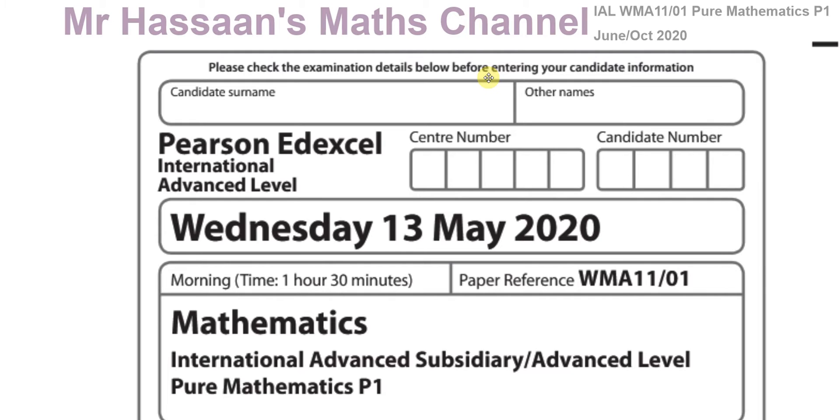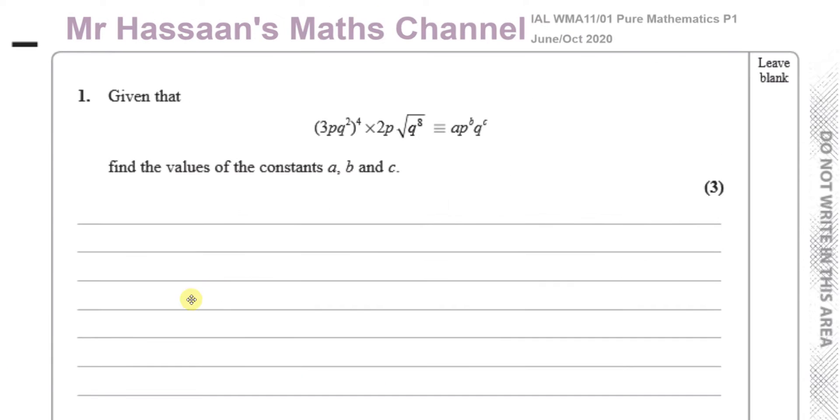So therefore this paper was cancelled, but it was used for the exam that took place in October, November of the same year. So even though it says May 2020 on the paper, it was actually the exam that was used in October 2020, so I've labelled it June-October 2020, because they used the May one for October. Anyway, let's just get straight ahead to question number one.